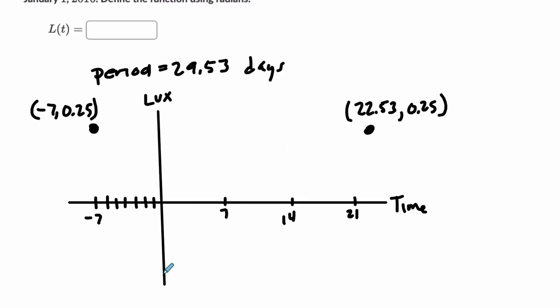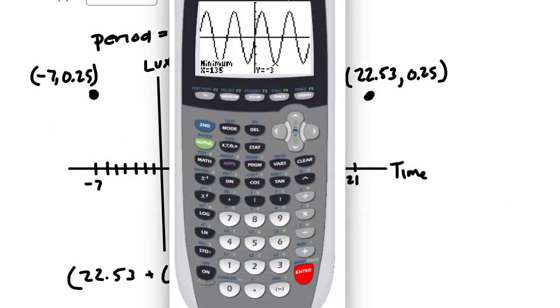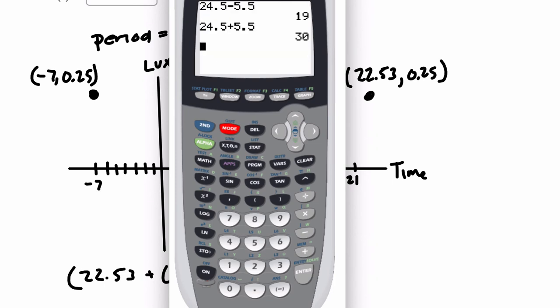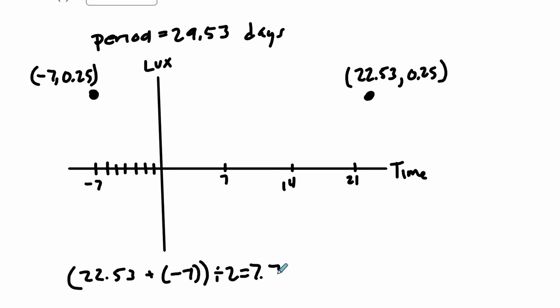So I'm going to say 22. Let's find that midpoint. 22.53 plus negative 7. And then we're going to divide that by 2. That's going to get us our midpoint, which is where there's a new moon, halfway between the full moons, of course. And I believe that's 7.765. Let me check that. So quit out of here. All right. 22.53 minus 7 divided by 2. 7.765. Okay. 7.765. And that gets us a point about here at 0. So this point is 7.765 and 0.